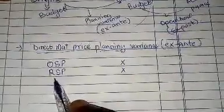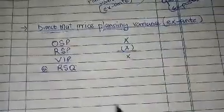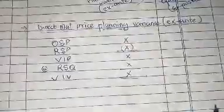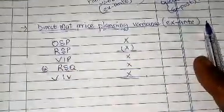When you subtract the original standard price from the revised standard price, that gives you the variance in price, at the revised standard quantity. This gives you the variance in value. That is the direct material price planning variance.